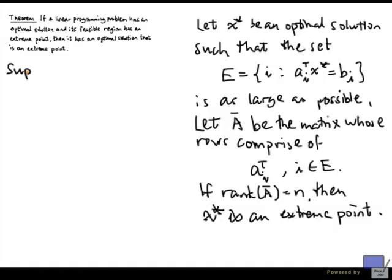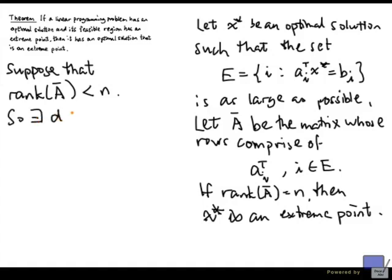So suppose that rank of A-bar is less than n. In that case, that means the nullity of A-bar is non-zero. So there exists d in R^n, d not equal to 0, such that A-bar times d equals 0.